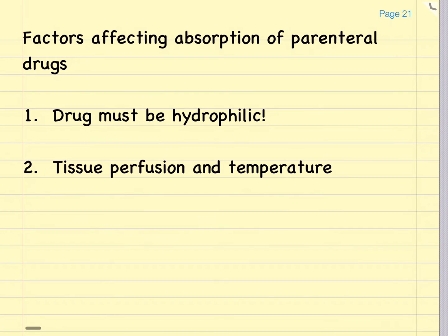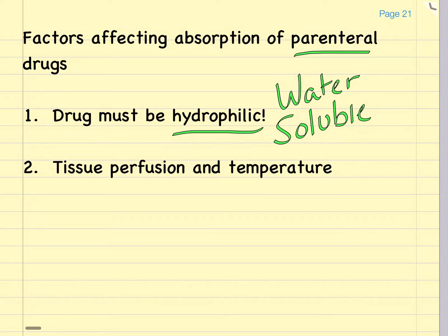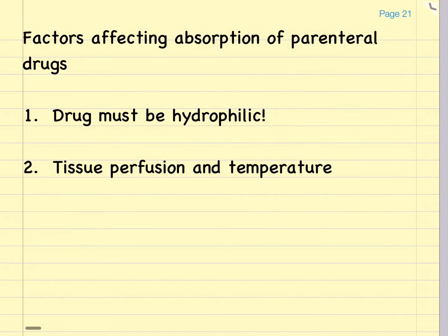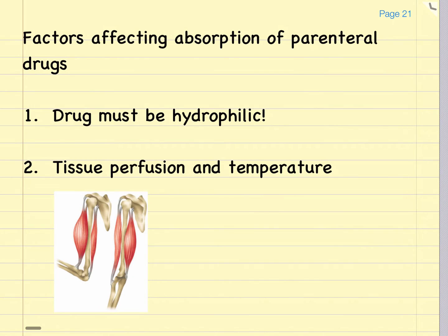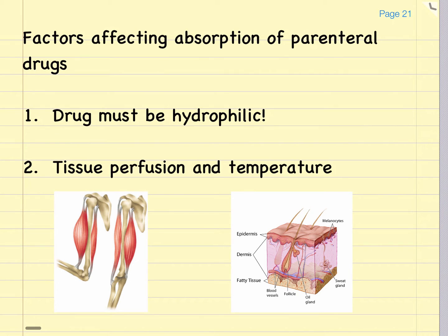Now let's look at factors affecting absorption of a parenteral drug — one that's injected into the body. The drug must be hydrophilic or water-soluble in order to be carried throughout the extracellular fluid in the bloodstream. Changes in tissue perfusion or blood supply to an area and changes in temperature at the injection site will affect absorption. A drug in a well-perfused site, such as muscle which has lots of capillaries, will be more quickly absorbed than a drug in a poorly perfused site, such as subcutaneous tissue. Poor perfusion, seen with conditions like shock or heart failure, is going to reduce absorption. The fight-or-flight response may actually speed up absorption by speeding up the heart rate.